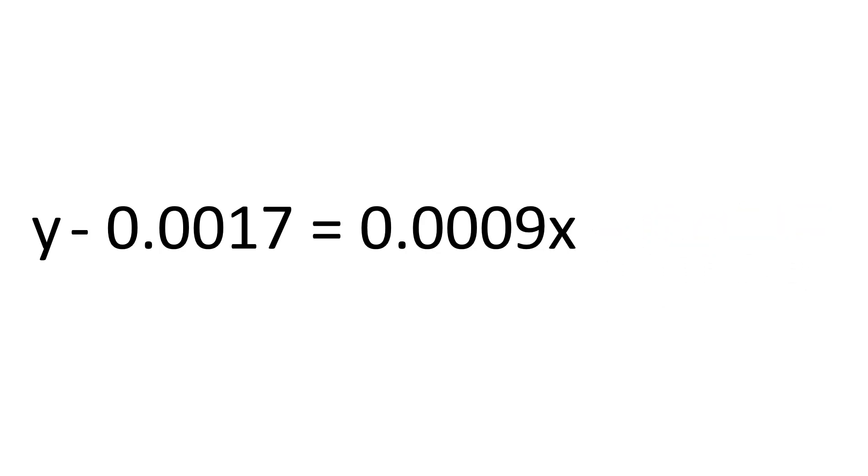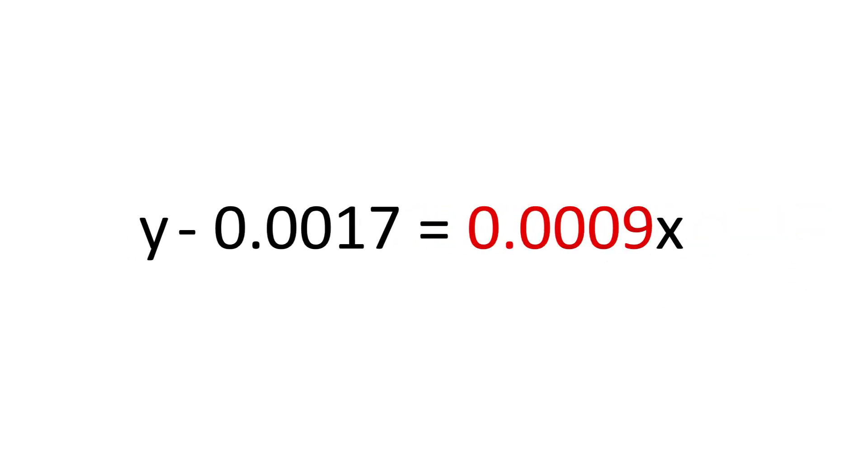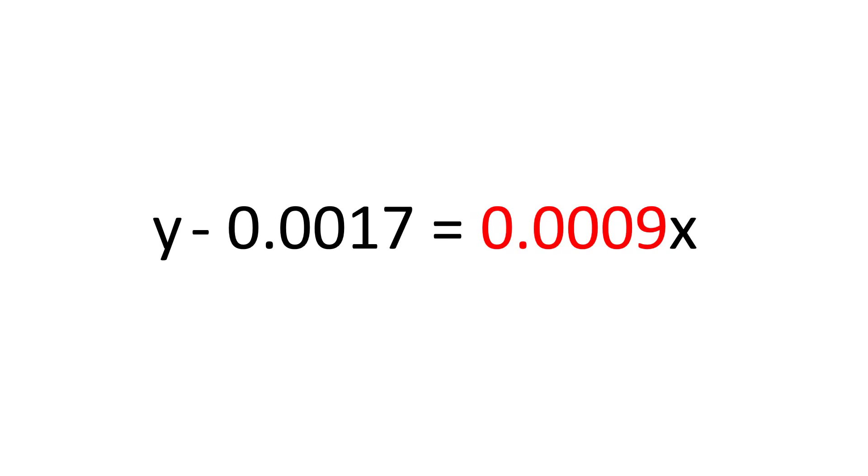The final thing we need to do is to move the slope value to the other side of the equation. Again we need to do the opposite action here. And since my slope is to multiply by 0.0009 I will divide by this.